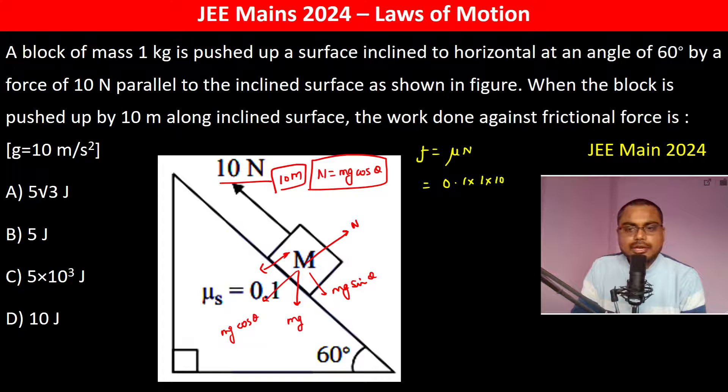Mass is 1, g is 10, cos of 60 is 1 by 2. So this is half newton.